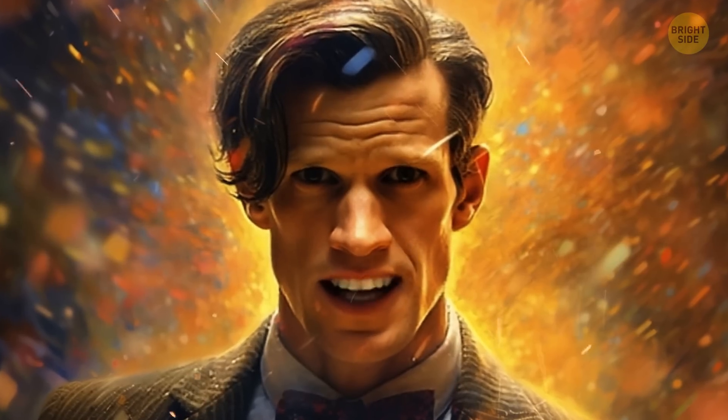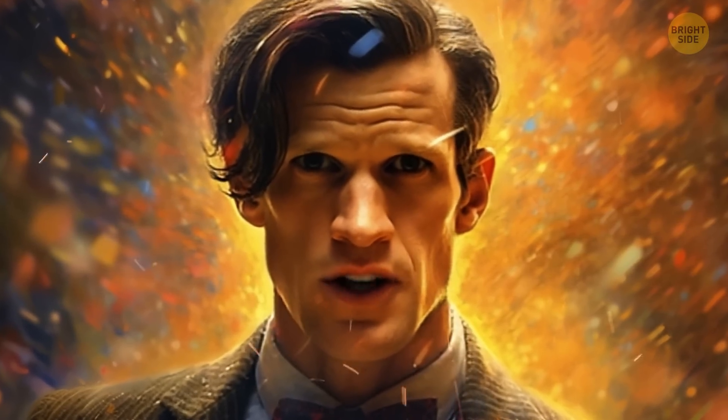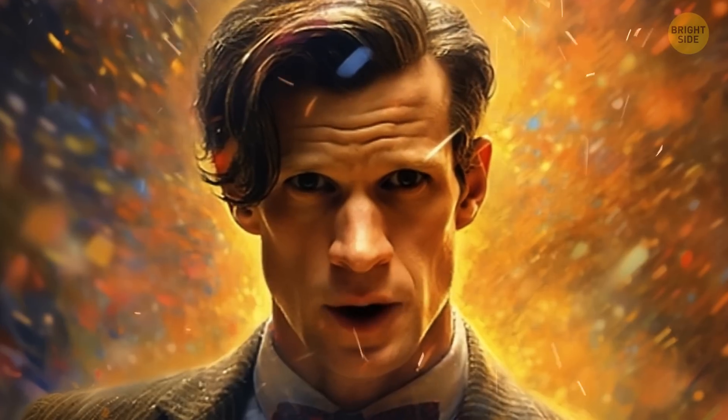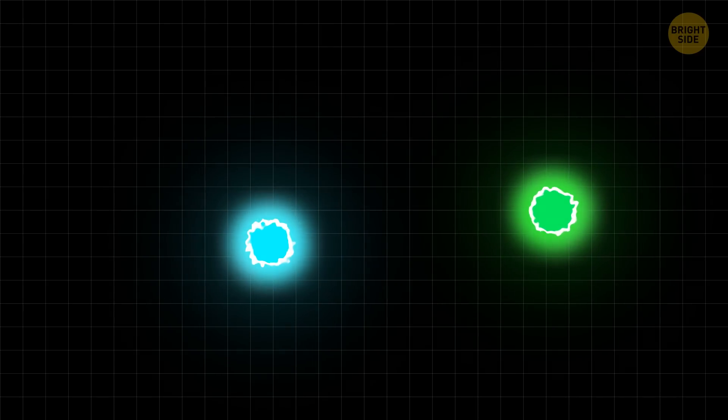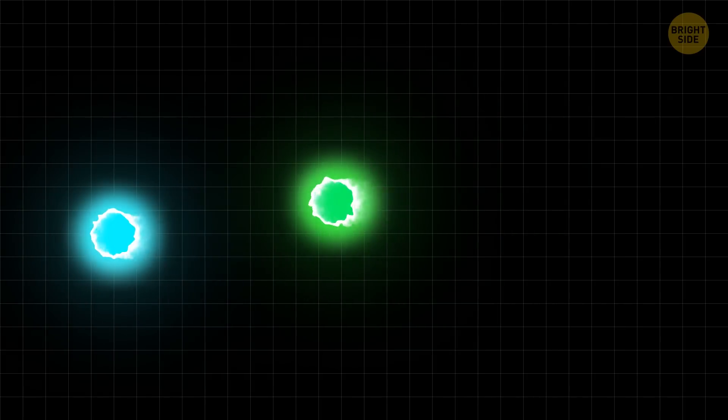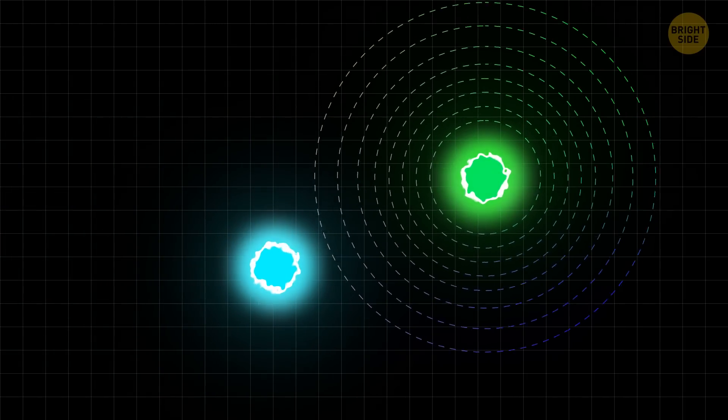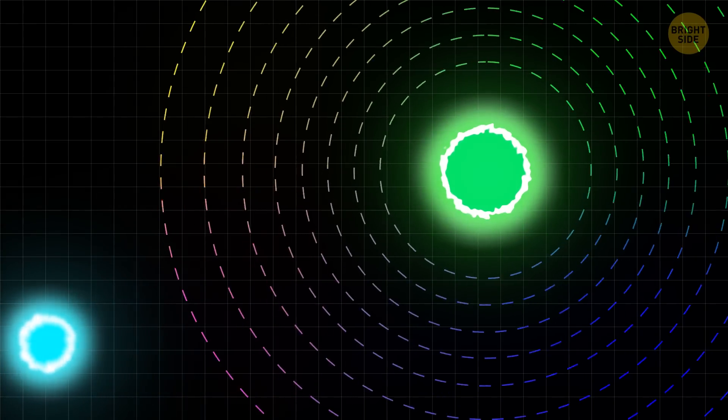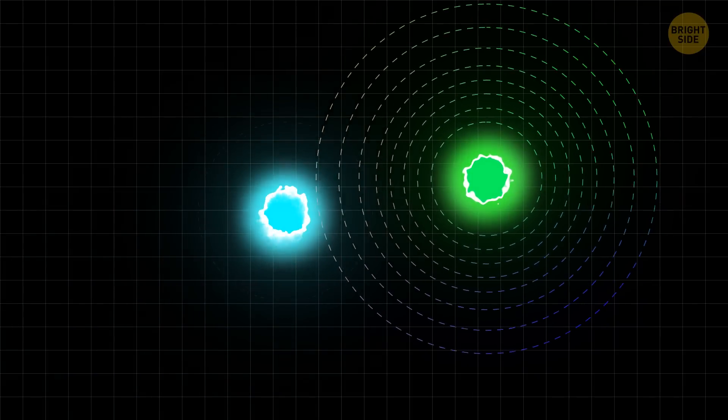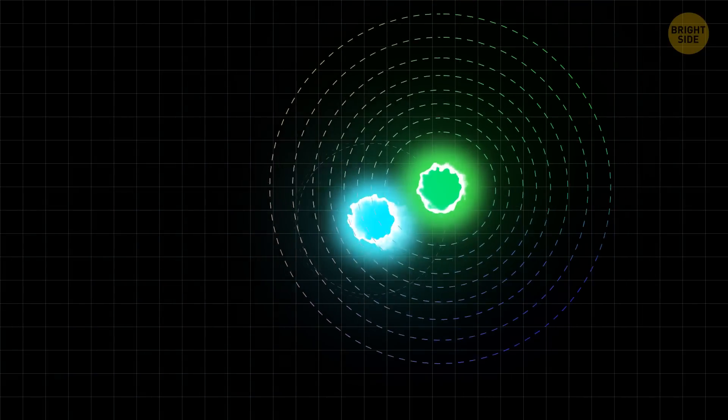Gravity, as amazing as it is, doesn't perform alone in this dance. It shares the spotlight with other forces, like electromagnetism. Let's imagine two electrons as dancers. Now, they don't directly push or pull each other like you might expect. Instead, one electron creates a special kind of field around itself, like an invisible force field. This field sets the stage for the show. The other electron senses this field and starts to twirl and interact with it. It's like they're following some choreography.